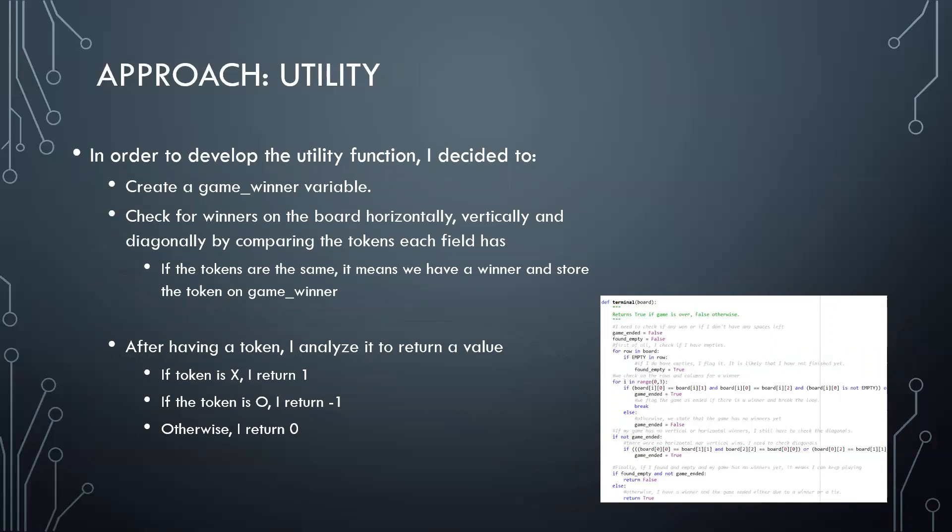My utility function has a game winner variable. It checks the board horizontally, vertically, and diagonally compared to the tokens it has. If the tokens are the same, I store this token. And after that, I analyze. So if my token was X, I return one. If my token is O, I return minus one. And otherwise, I return zero.